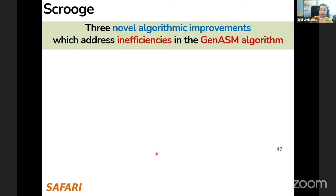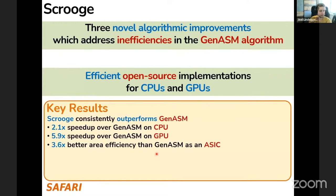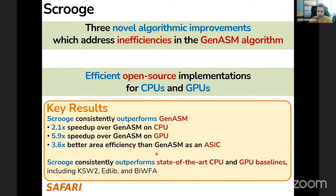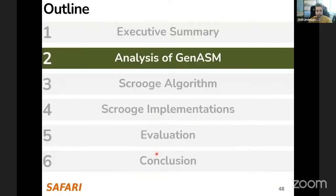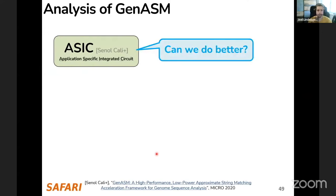To this end we propose SCROOGE, which includes three novel algorithmic improvements on top of GenASM that address some inefficiencies in that algorithm. It also includes efficient open-source implementations for CPUs and GPUs, all available on GitHub. In particular, SCROOGE consistently outperforms GenASM on CPU, GPU, and ASIC by 2.1x to 5.9x depending on the hardware, and SCROOGE also outperforms state-of-the-art CPU and GPU baselines including CaseW2, Edlib, and BiWFA.